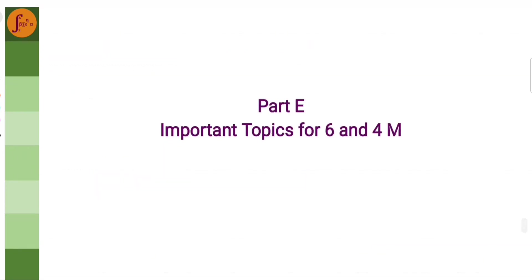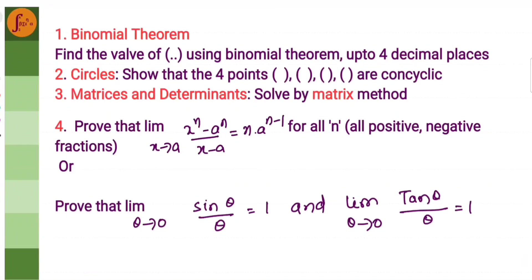So, under Part E, we have six marker and four marker. Let us go through them. Again, in binomial theorem, we have decimal expansion. Let us focus on that. Then circles, given four points, we have to show that the points are concyclic. Then, matrix and determinants, solve by matrix method. This is one of the key topics.